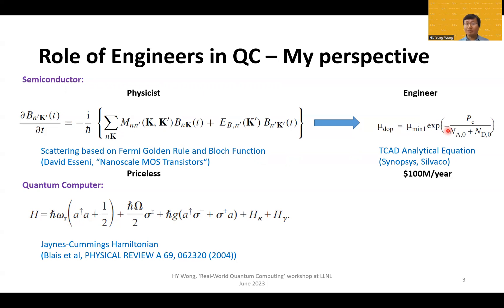What did the engineers do? They convert it to an empirical equation, yet physical, and implement them in a very efficient way in commercial software, and it is a 100 million per year market.